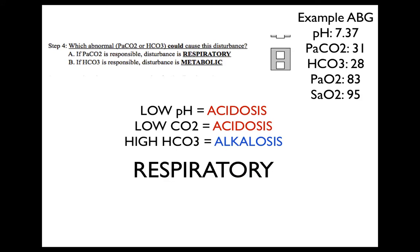Step four: which abnormal value could cause this disturbance? This means which bicarb or carbon dioxide is the same abnormal as the pH. In this example, we're looking to see which one is also acidotic since our pH is acidotic at 7.37. Because the CO2 is low at 31, indicating an acidosis, we know that respiratory is the cause — CO2 is a respiratory problem and bicarb is a metabolic problem. We now know we have a respiratory acidosis.